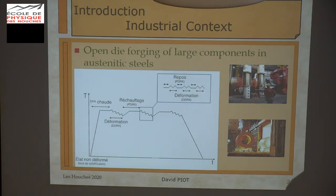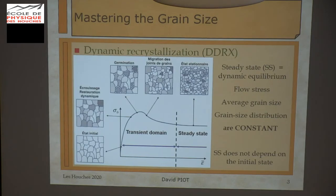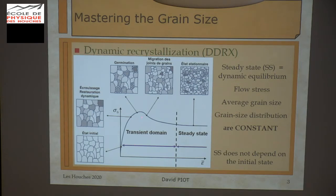You have a sequence of dynamic evolutions and also metadynamic evolutions. Here you have a typical single peak stress-strain curve in the case of dynamic recrystallization material, with a transient domain, with this peak, and after large strain, a steady state in which all the material parameters are constant in the dynamic equilibrium.